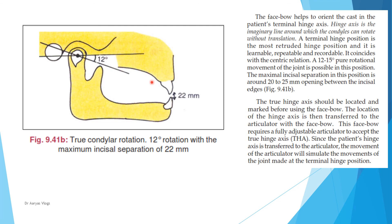This facebow orients the cast in the patient's terminal hinge axis. The hinge axis is the imaginary line around which the condyles can rotate without translation. A 12 to 15 degree pure rotational movement of the joint is possible in this position. Terminal hinge position is the most retruded hinge position and it is learnable, repeatable, and recordable. The maximum incisal separation in this position is around 20 to 25 mm. True hinge axis should be located and marked before using the facebow. Location of the hinge axis is then transferred to the articulator with the facebow, and this requires a fully adjustable articulator. Since the patient's hinge axis is transferred to the articulator, the movement of the articulator will simulate the movements of the joint made at terminal hinge position.